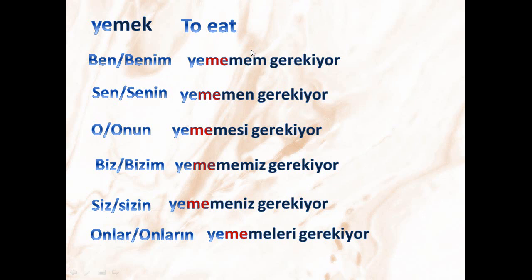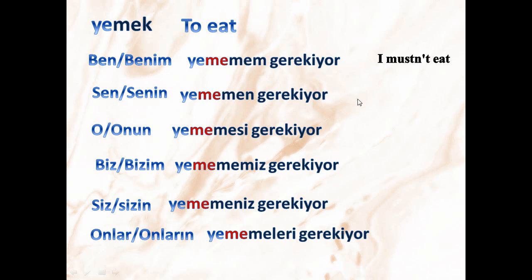I'm going to utter them in three forms. We omit the infinitive suffix and put 'ye' just before the whole suffix. Ben/benim yememem gerekiyor, or just yememem gerekiyor — I mustn't eat. Sen/senin yememem gerekiyor, or just yememem gerekiyor — you mustn't eat.